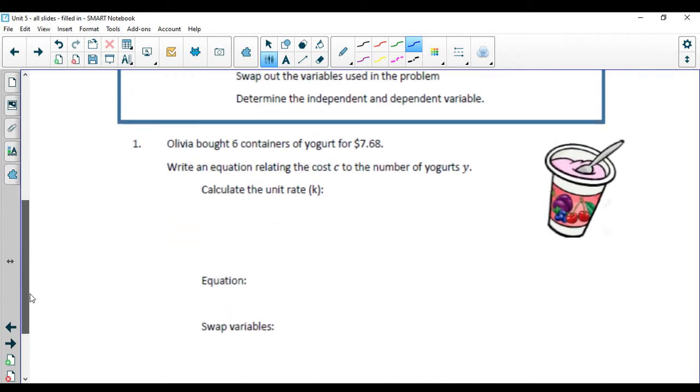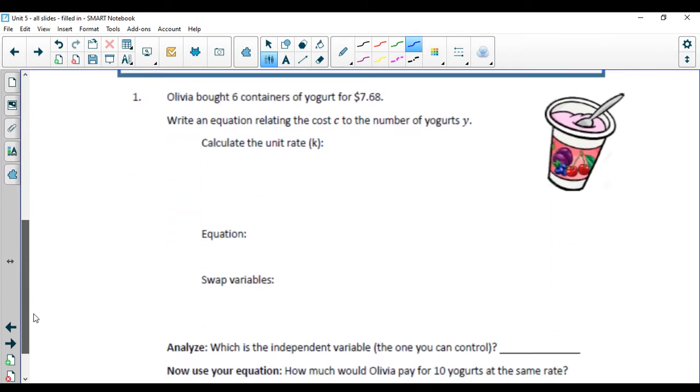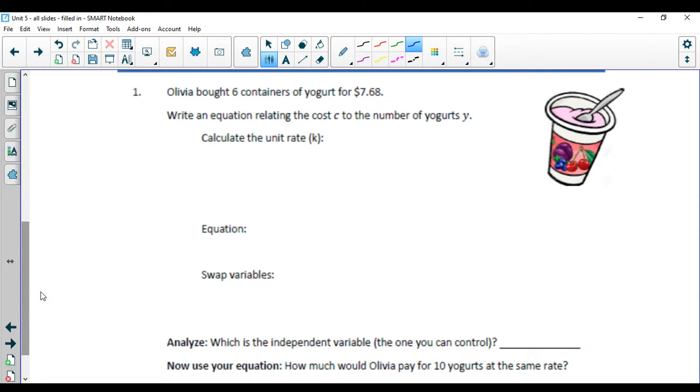Following these steps, Olivia bought six containers of yogurt for $7.68. Write an equation relating the cost c to the number of yogurts y. We're going to start off with calculating our unit rate. Because there's money here, the money is going to come first. So we're going to do $7.68 for six containers of yogurt. $7.68 divided by six containers gives us $1.28 per container.